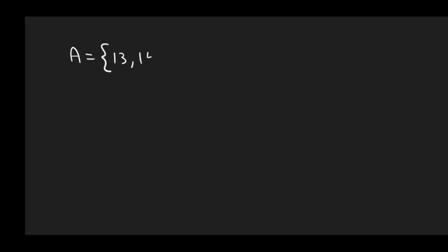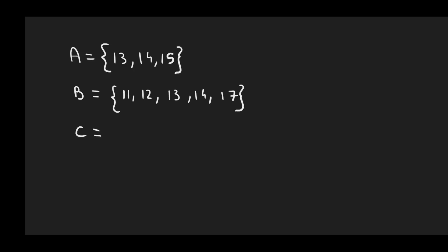Let's try with another example. Let's say we have A = {13, 14, 15}, B = {11, 12, 13, 14, 17}, and C = {16, 17}. So the universal set in this case is going to be A union B union C.